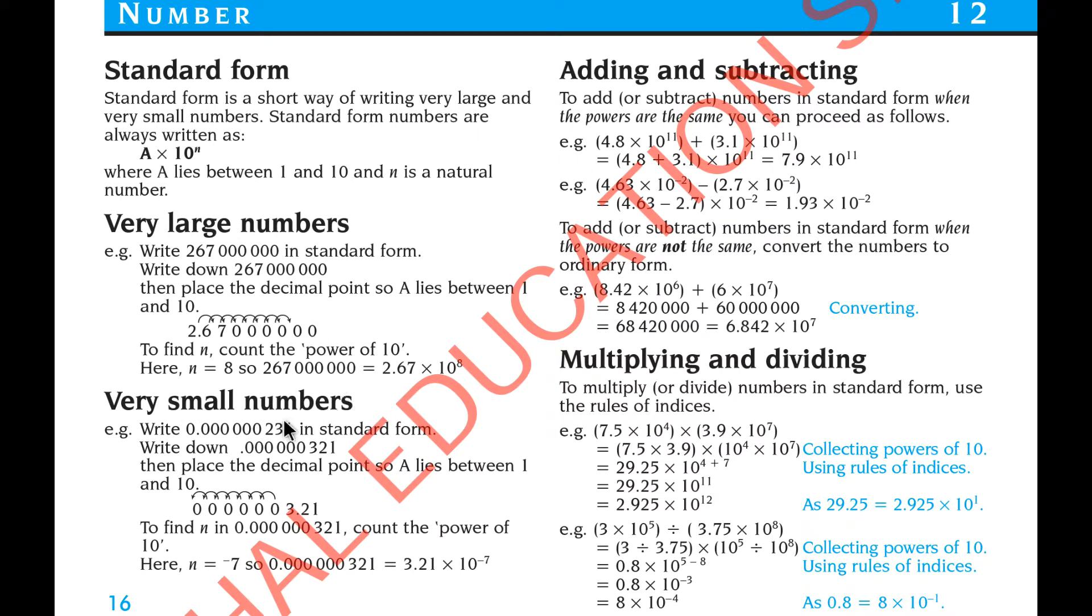Very small number, so same. There is another way. Write 0.0000000231 in a standard form. So write down the normal decimal number. So here there is a small printing mistake, just ignore it.